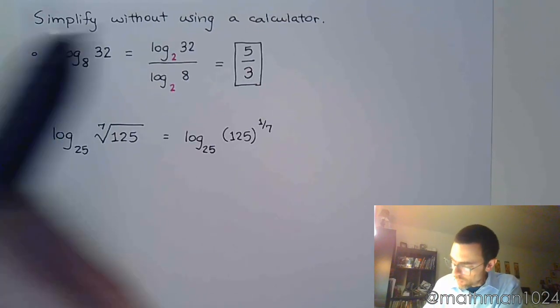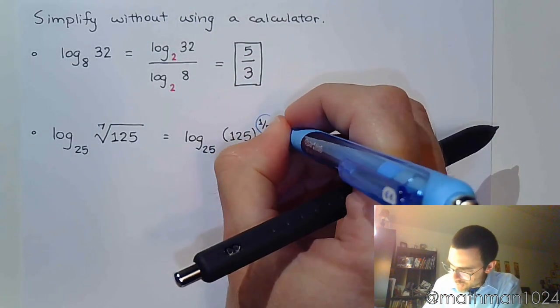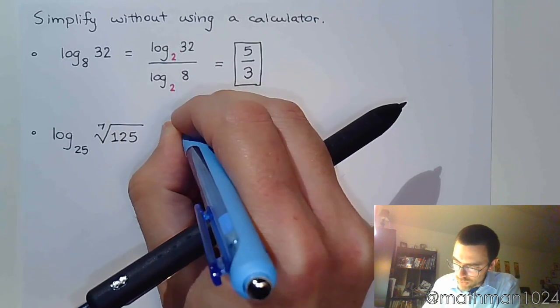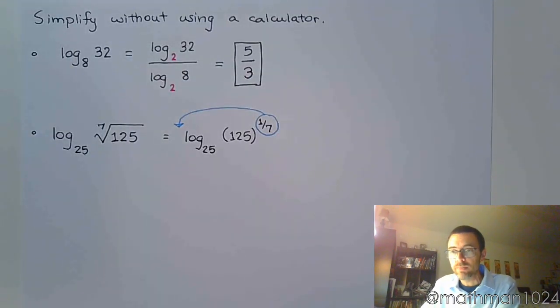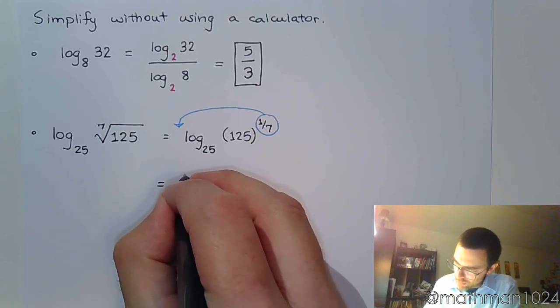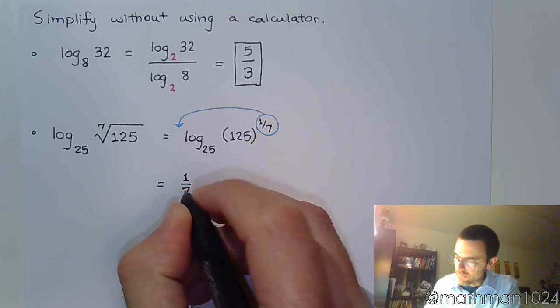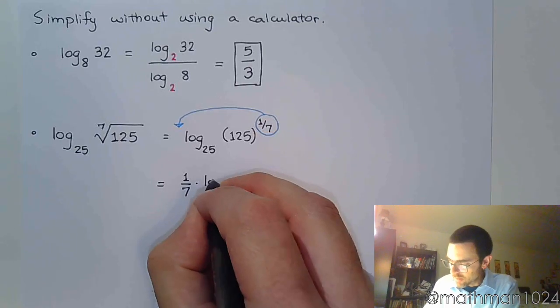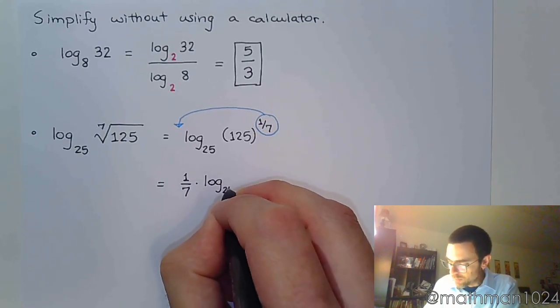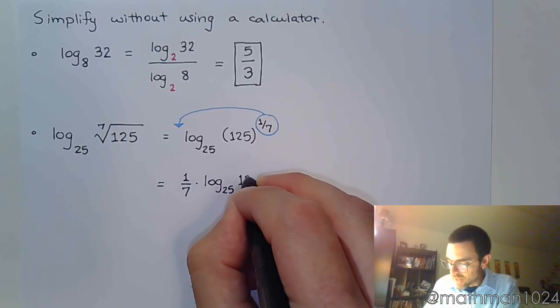And when we do this, we can now apply that property of logarithms that allows that power to come out in front. Alright, so if I do that, this becomes 1/7th times log base 25 of 125.